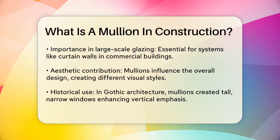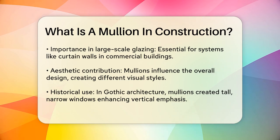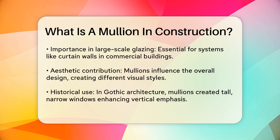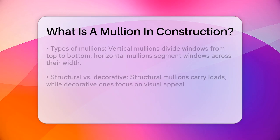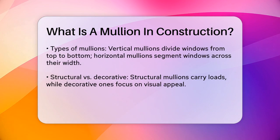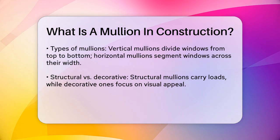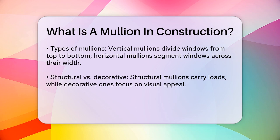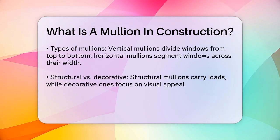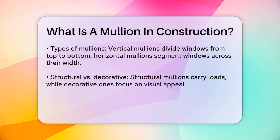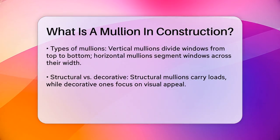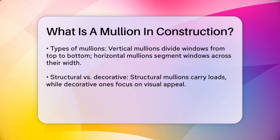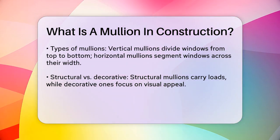There are several types of mullions, each with its own specific use. Vertical mullions are the most common and run from the top to the bottom of the window frame, dividing it into separate sections. Horizontal mullions, on the other hand, are placed across the width of the window, often seen in clerestory windows where they segment the top row of glazing from the bottom. Structural mullions are designed to carry the load of large windows or curtain walls, transferring the weight to the building's structure. These are typically made from strong materials like steel or aluminum.